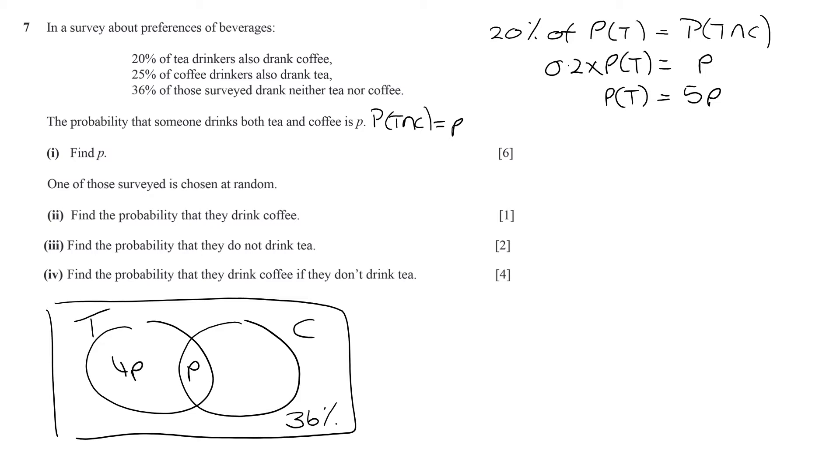25% of the probability of coffee has to equal the probability of tea and coffee, so 0.25 times the probability of coffee has to equal p, which means the probability of coffee is 4p. And we already have p in, which means we must have 3p.